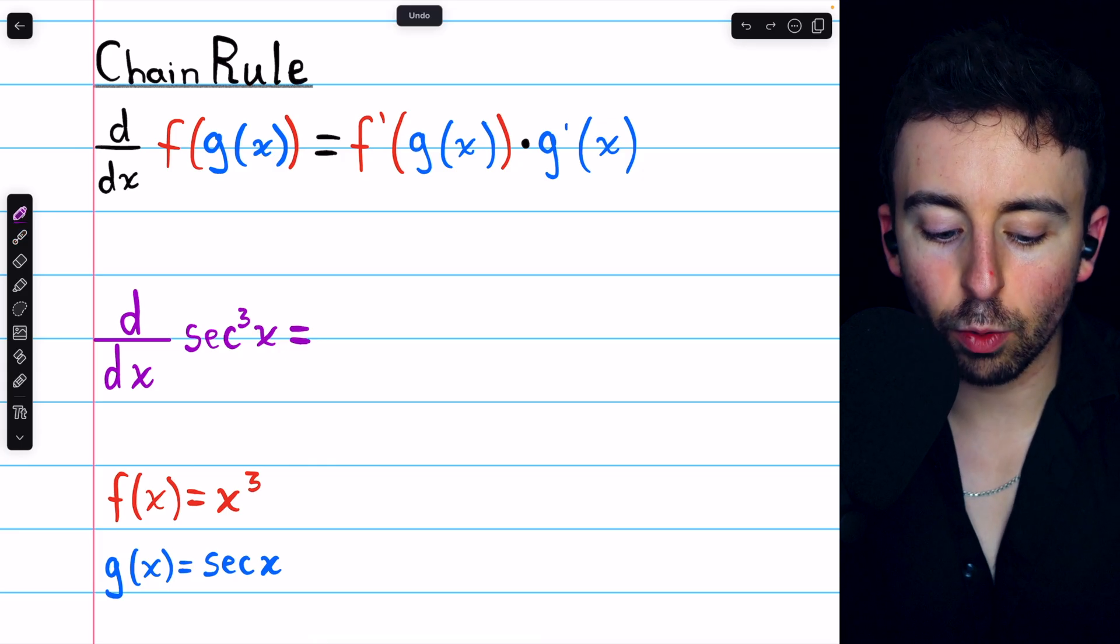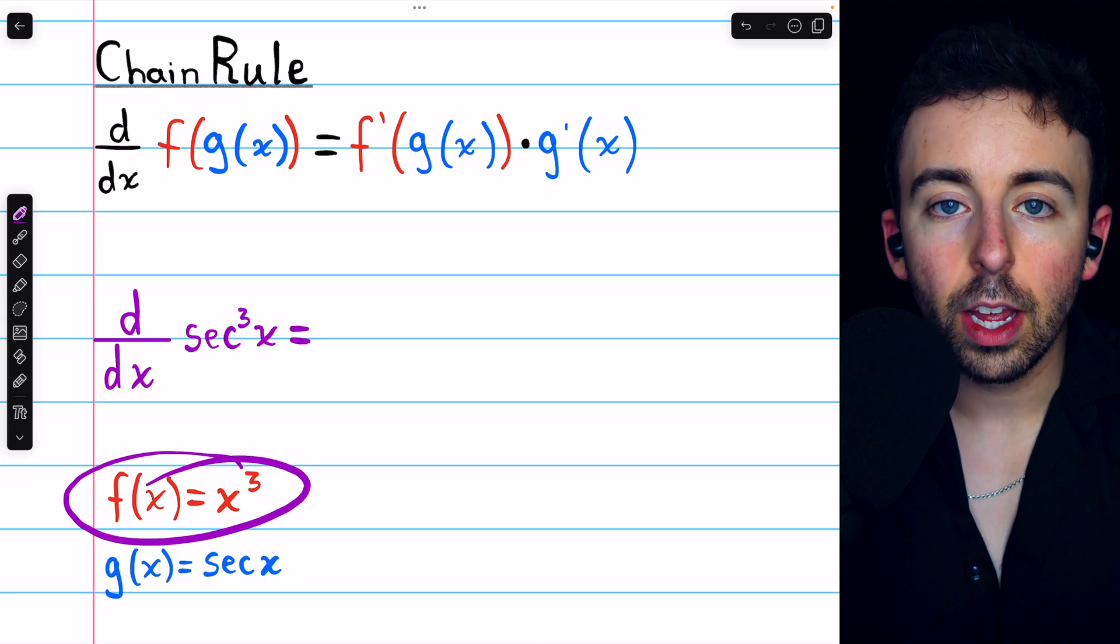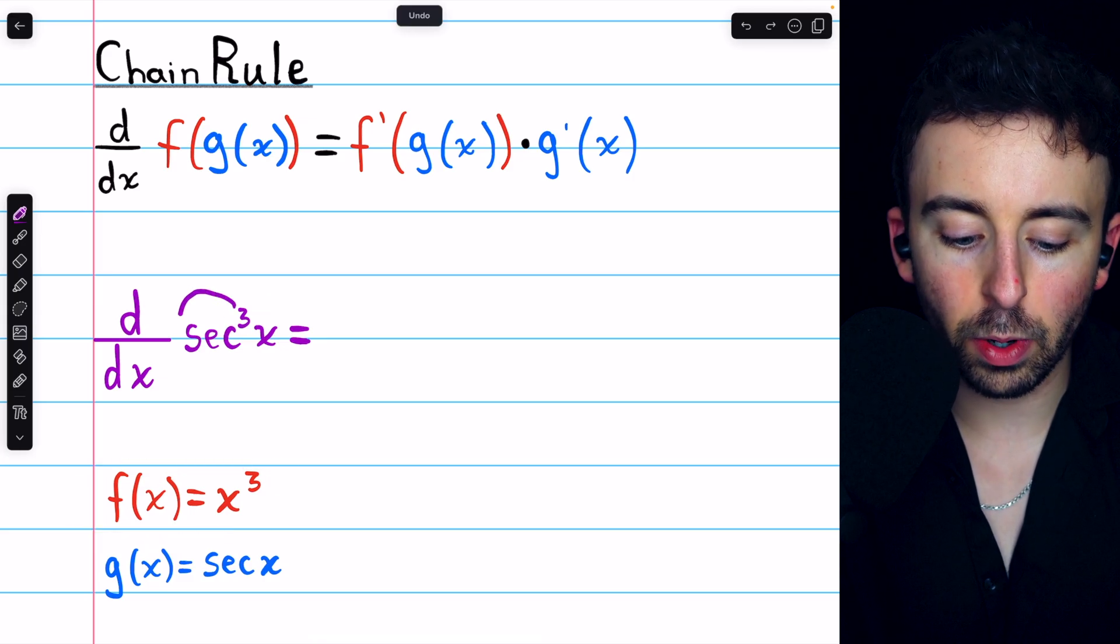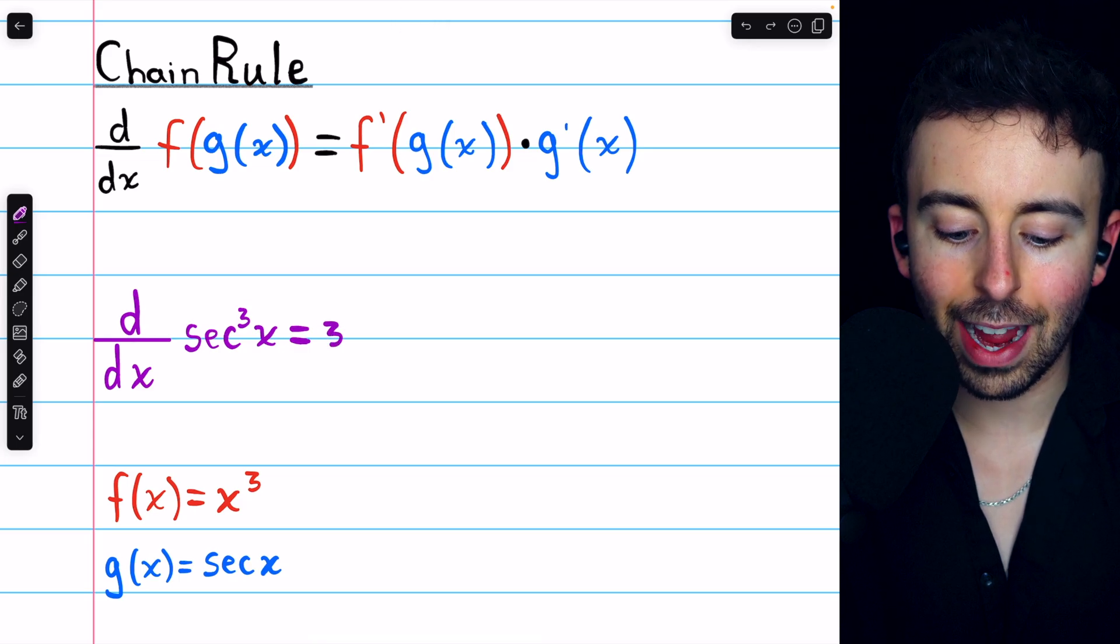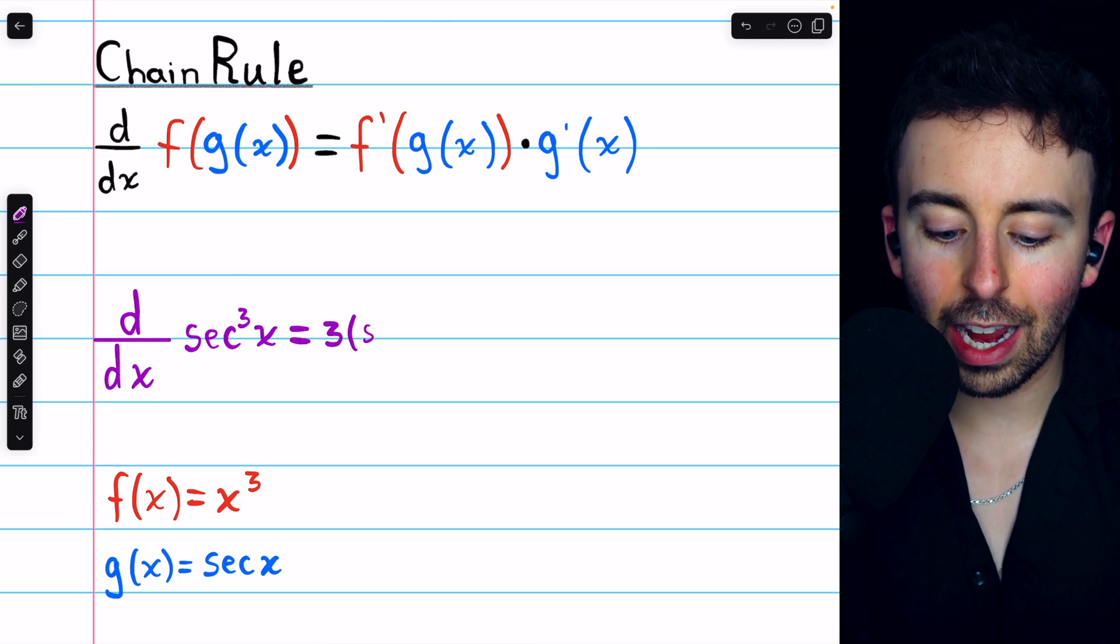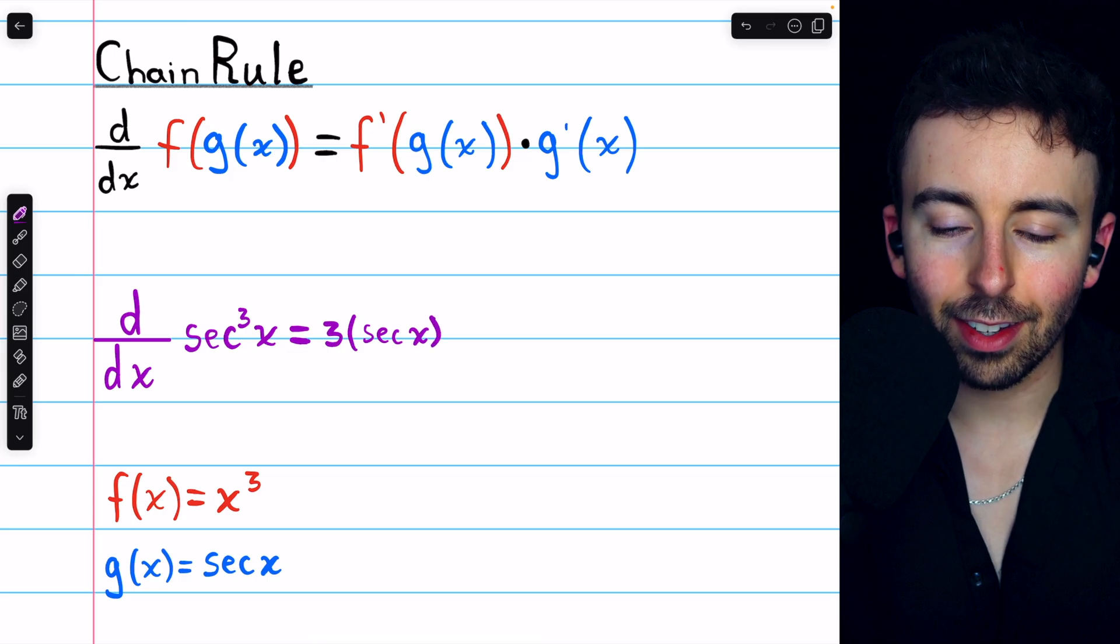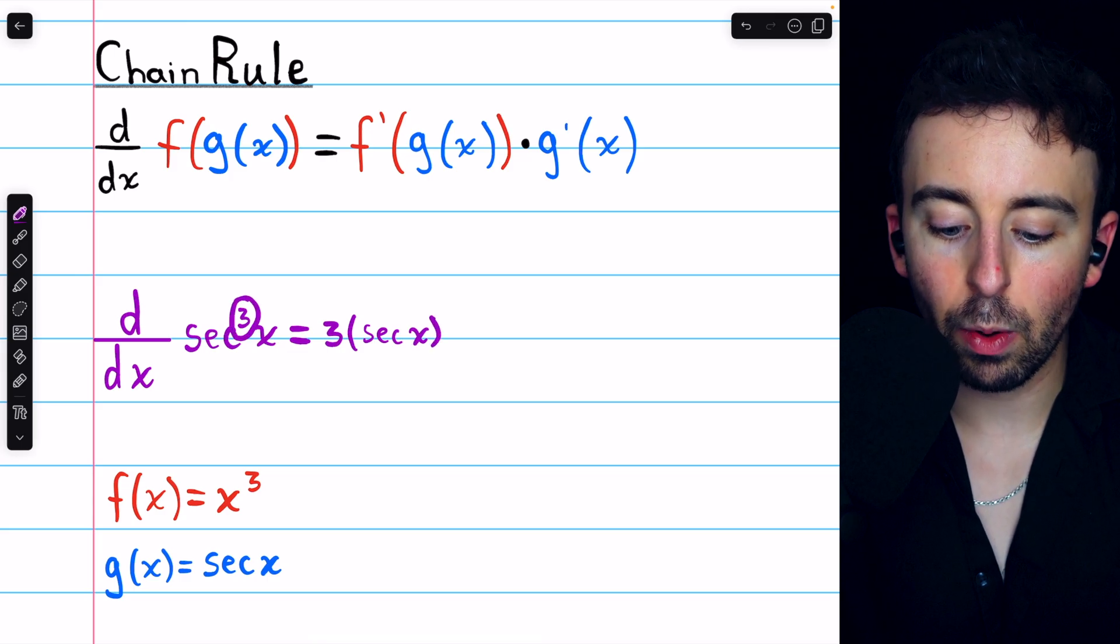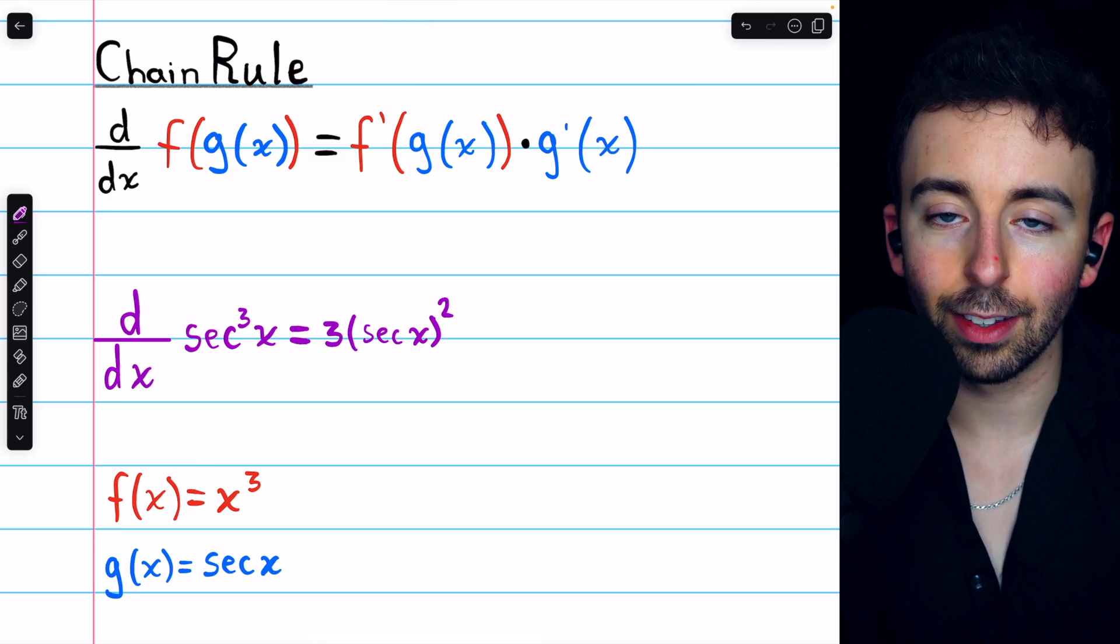We begin with f prime, the derivative of the outside function. The derivative of a thing cubed is found by taking that exponent of 3 down in front as a factor. Then, don't change the inside function. The inside function is secant, so we don't want to change that. Then reduce the power by 1, 3 minus 1 is 2.